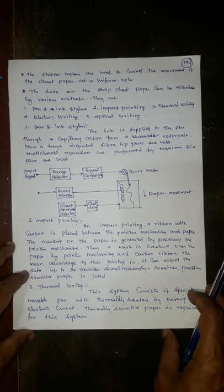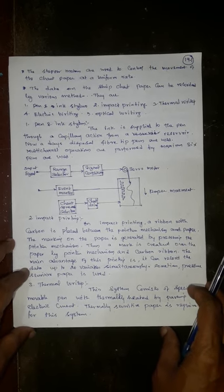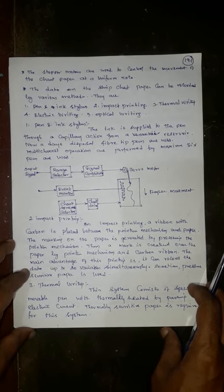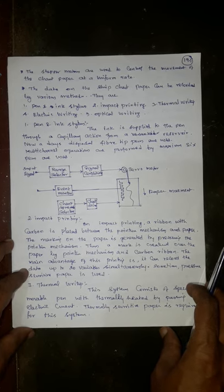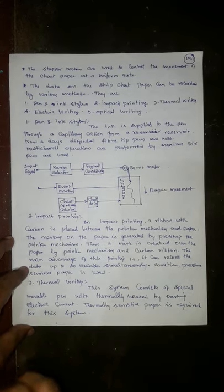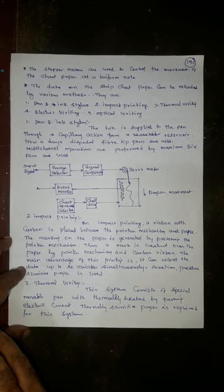The data on the strip chart paper can be recorded by various methods. They are pen and ink stylus, impact printing, thermal writing, electric writing, and optical writing.